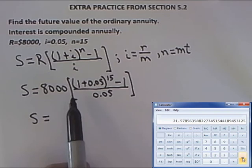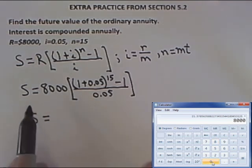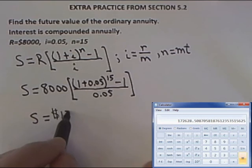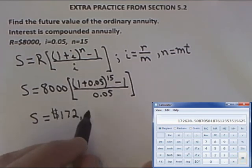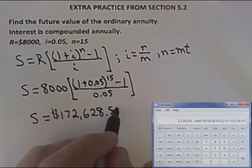That quantity has to be multiplied by $8,000, so I do times 8,000 equals. That tells me that the future value of this ordinary annuity is $172,628.51.